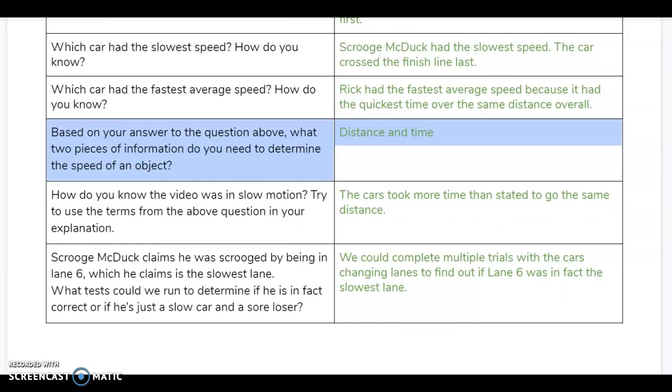The video was in slow motion, and we know this because it took more time in the video than it told us the cars actually took. When we get to the end of the video, it told us the cars' finishing times and most of them were under three seconds. It took longer than three seconds for that video to play, which told us that it must be in slow motion.